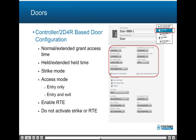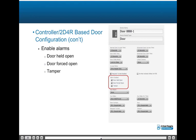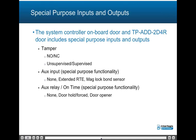The Controller/2D base door configuration includes configuration of normal/extended grant access time, held/extended held time, strike mode of lock on close or timed unlock, access mode of entry only reader or entry and exit readers, and the ability to enable request to exit and do not activate strike or request to exit. Alarms that can be enabled include door held open, door forced open, and tamper. Special purpose inputs and outputs include radar tamper (configurable for NO or NC, unsupervised/supervised), O input for none/disabled, extended request to exit, or magnetic lock bond sensor input, and O relay/on time for none/disabled, door hold and forced, or door opener for motorized door openers.